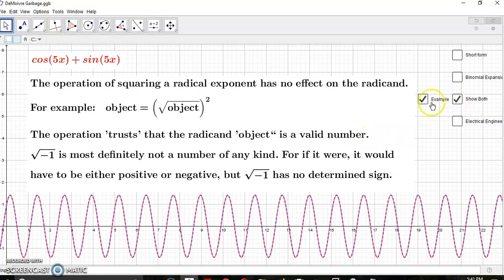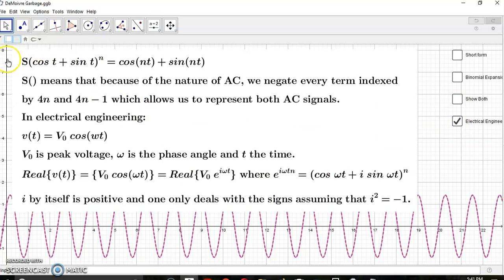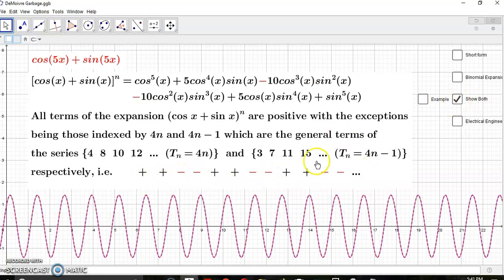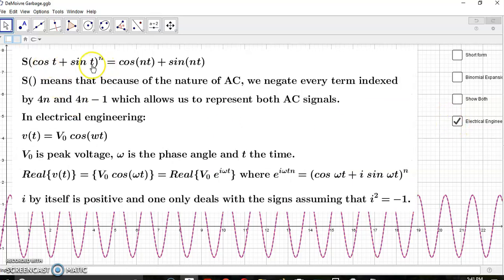So now why do some morons say that this is needed in electrical engineering? I've said S of this, and what I mean by S of this is that one flips the signs in these positions. That's what S of this means. So it's done because of the nature of alternating current, and so we negate every term indexed by 4n and 4n minus 1, which allows us to represent both AC signals.